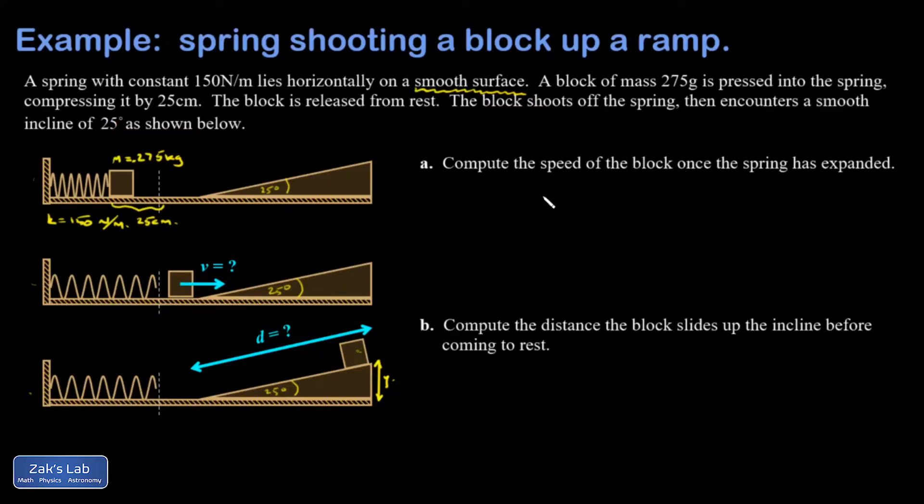Compute the speed of the block once the spring is expanded. So we're really using conservation of energy now. There are no non-conservative forces acting, and for us it's practically always friction. So it's just my total mechanical energy is conserved. That means the initial potential energy, sometimes I'll use a notation of U for that, sometimes PE. I'll just use the PE notation this time.